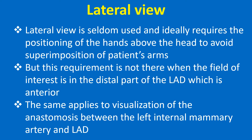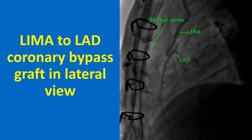The lateral view is seldom used and ideally requires the patient's hands to be positioned above the head to avoid superimposition of the arms. This requirement is not necessary when the field of interest is the distal part of the LAD, which is anterior. The same applies to visualization of the anastomosis between the left internal mammary artery (LIMA) and LAD. A LIMA-to-LAD coronary bypass graft in lateral view is shown; the image has been darkened by post-processing to better visualize the vessels. Since injection was into the left subclavian artery near the LIMA ostium, contrast density was lower than a super-selective injection. The sternal wires indicate post-sternotomy status, distal flow into the LAD is good, and retrograde flow from the anastomotic site into the proximal LAD is also seen.